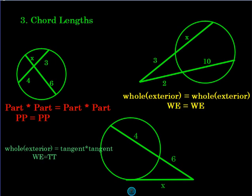Everybody's favorite, the chord lengths. We have PP WE WE WT. So remember when the lines are intersecting inside the circle, we're not talking about angles anymore. We're talking about the lengths of segments. That's when we're going to use PP. Part times part equals part times part.